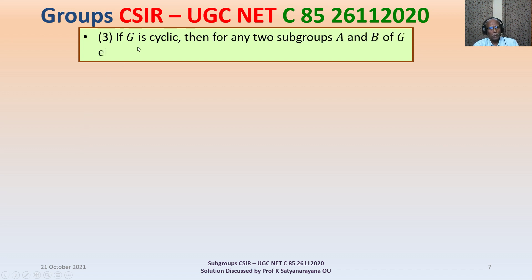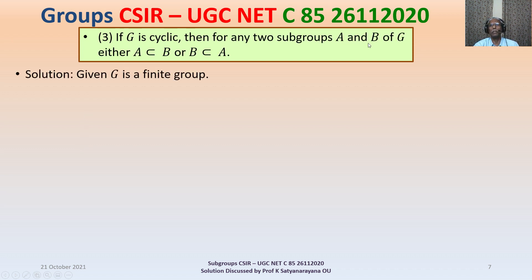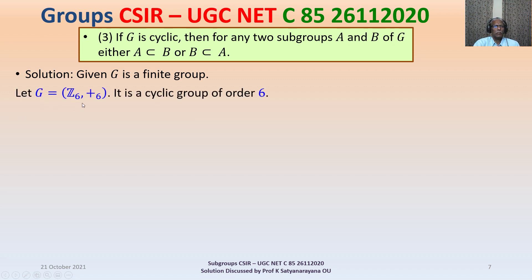The third statement: if G is cyclic, then for any two subgroups A and B of G, either A is contained in B or B is contained in A. This is not necessarily true. Consider G = ℤ₆ under addition modulo 6 — it is a cyclic group of order 6.